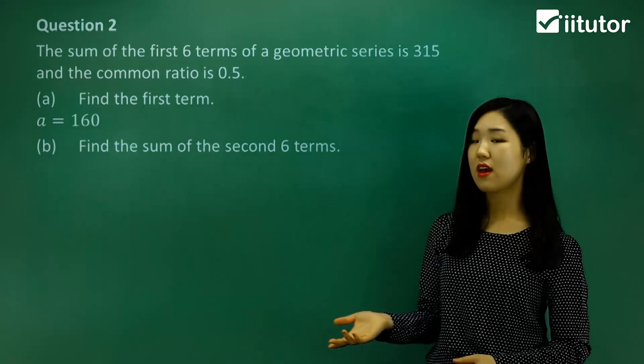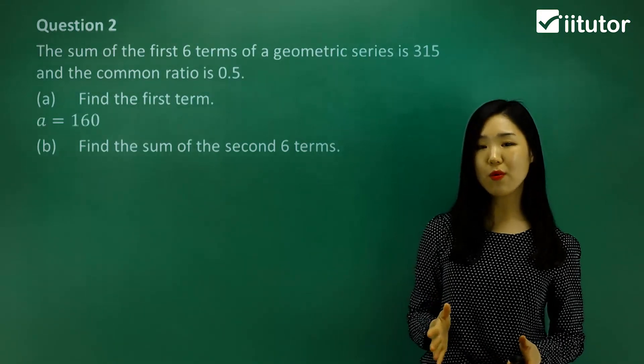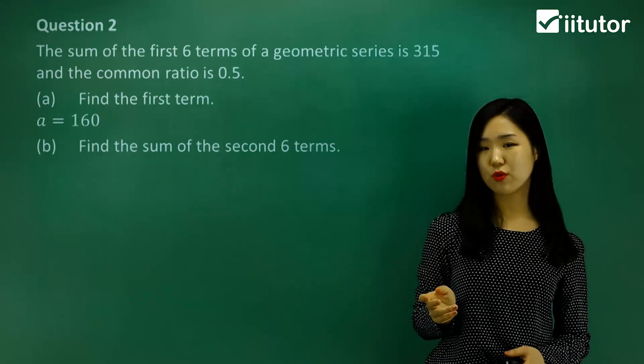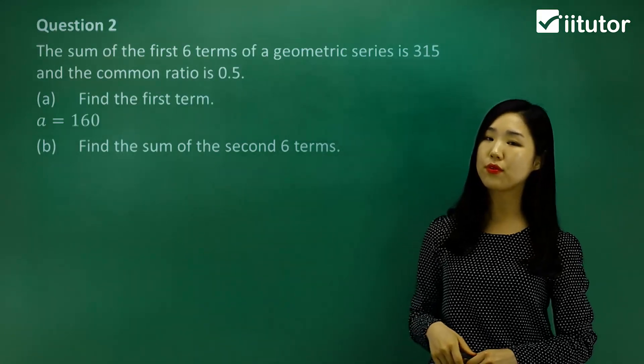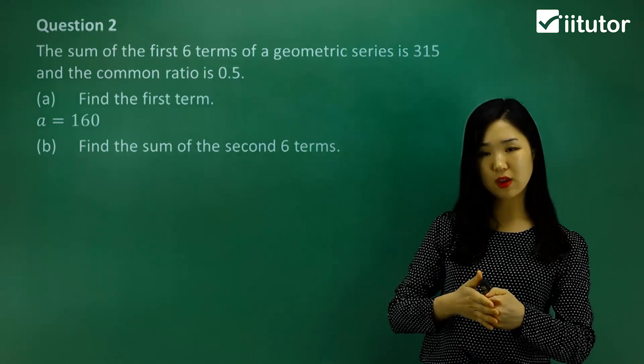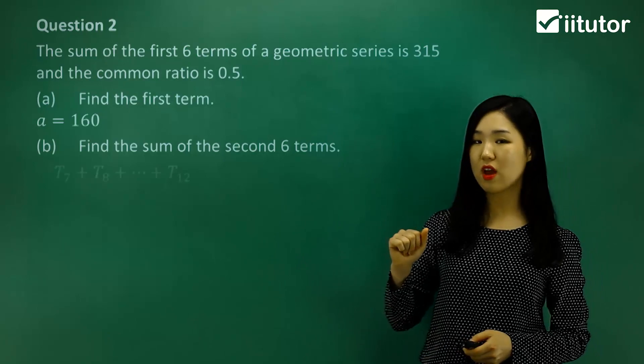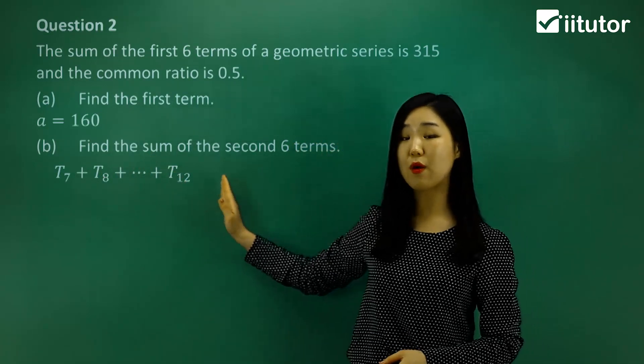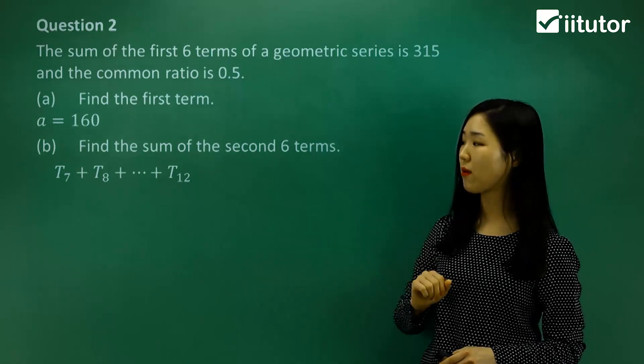So find the sum of the second six terms. We know what the first six terms add to. We know that it adds to 315. What we want to do is find the sum of the next six terms, the second lot of six terms. So this first six terms is basically first term, so T1 all the way to T6, first term to the sixth term. But the next lot of six terms would be the seventh term all the way to the twelfth term. That would make the second lot of six terms. So be careful here guys. That's what they're asking.